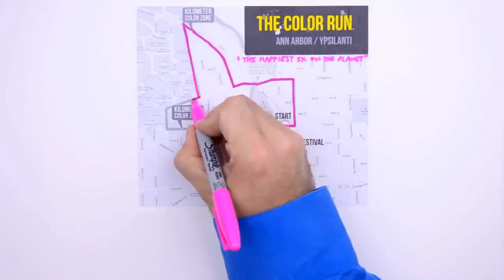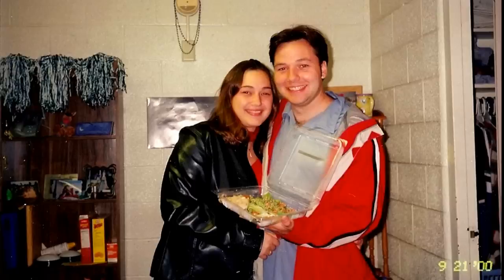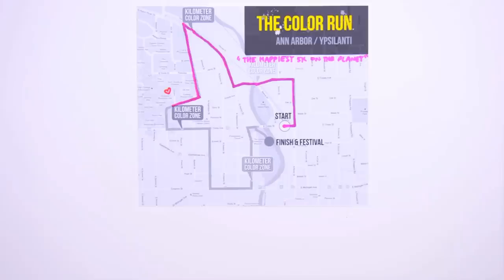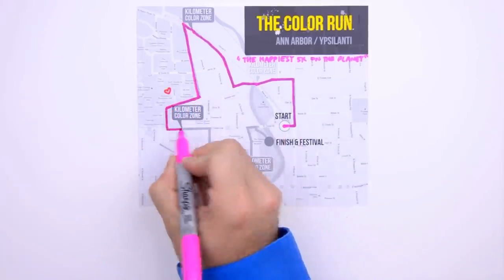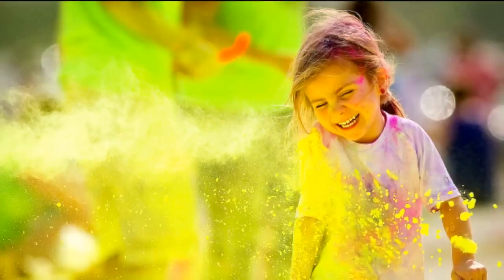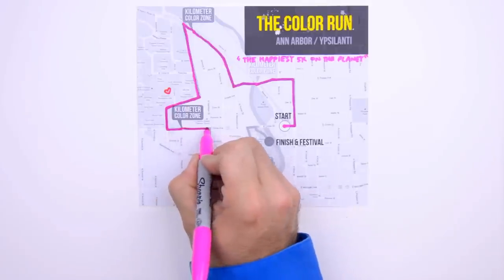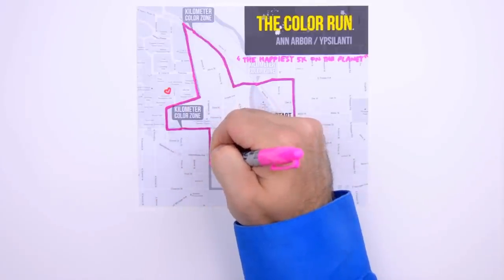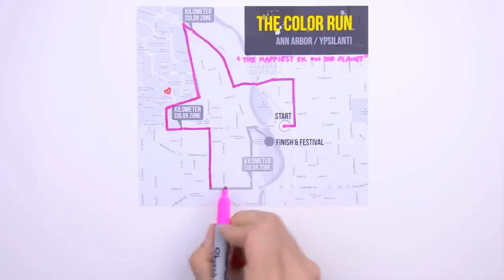the color runners turn west and jog past the dorm where I met the woman of my dreams, then they head south, then east, through another kilometer color zone, before heading south again. Unbeknownst to runners, the next turn puts them on an ancient mastodon trail, now paved, populated, and pronounced Michigan Avenue.